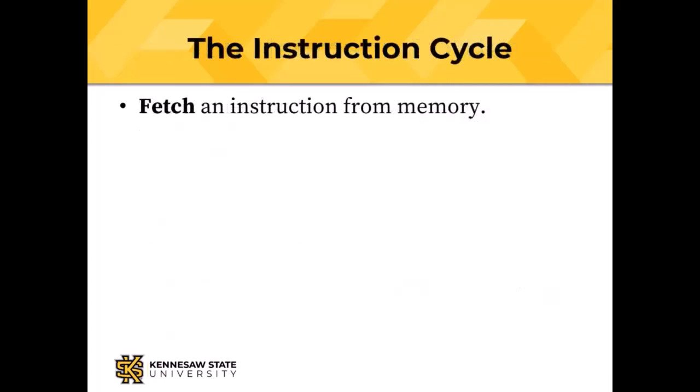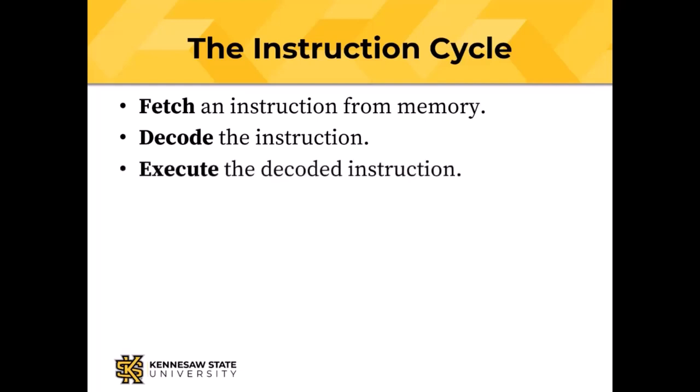The instruction cycle is fetch, decode, and execute. The fetch part involves reading an instruction from memory and getting it into the CPU. The decode part can be done in one of two ways: we can build combinational logic that takes the bits from the instruction and activates the necessary circuits, or we can do microprogramming, where a small bit of combinational logic decodes the instruction similarly to how you'd write a Java program to do that.